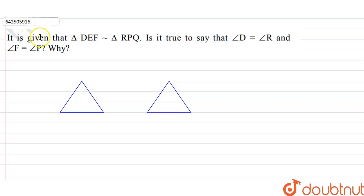Hi students, our question is: It is given that triangle DEF is similar to triangle RPQ. Is it true to say that angle D equals angle R and angle F equals angle P? Why?